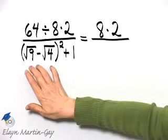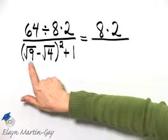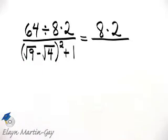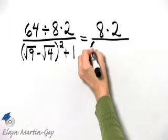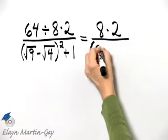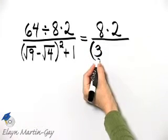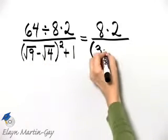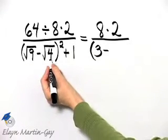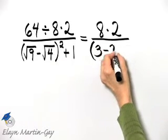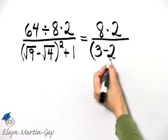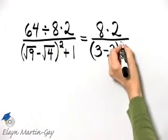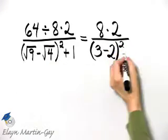And within the set of parentheses, I will evaluate this square root and this square root. So what is the square root of 9? The square root of 9 is 3 because 3 times 3 is 9. Then minus. What is the square root of 4? The square root of 4 is 2 because 2 times 2 is 4. And then I have close parentheses. And then I have close parentheses square plus 1.